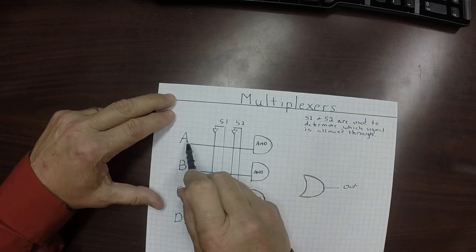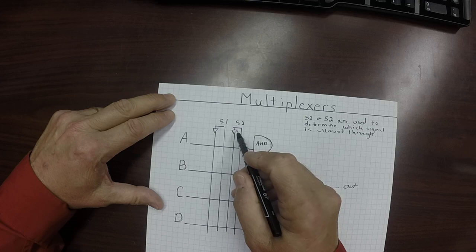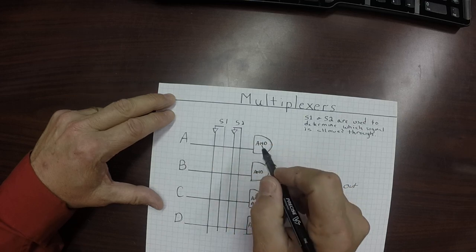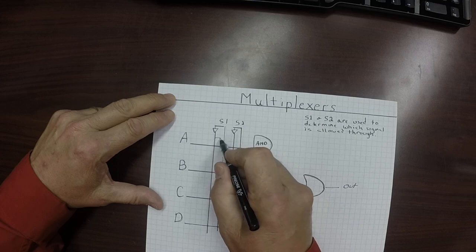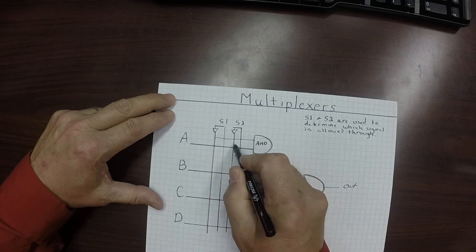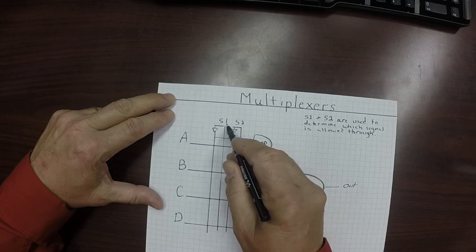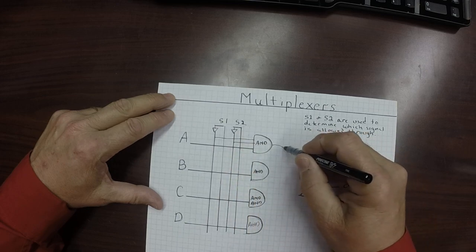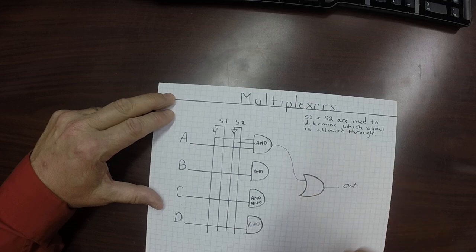So if I want A to come out, I want S1 to be 0. This is a negation right here, so I'm going to draw this over here. This to be 0 and that to be 0. And if S1 and S2 are 0, then this AND gate will come out and go into that OR gate.